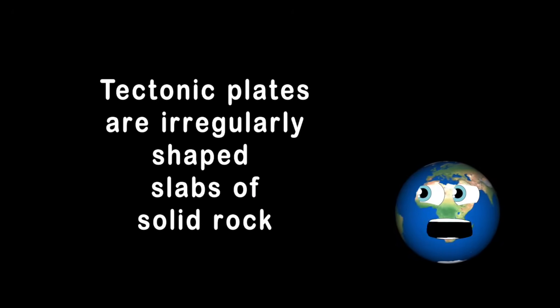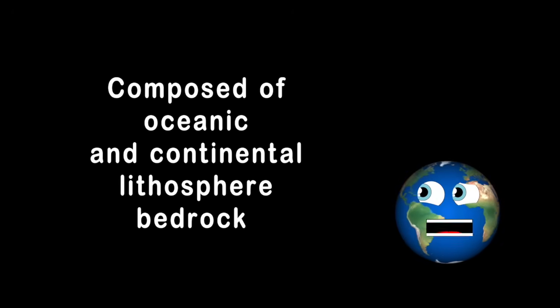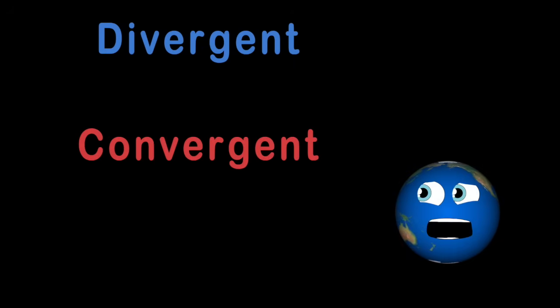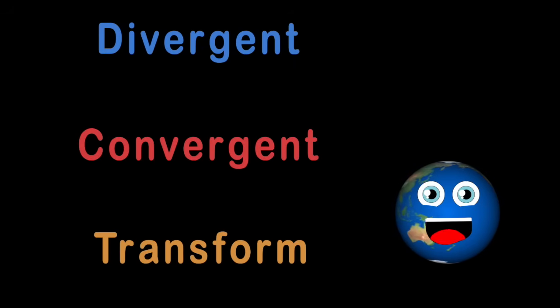Tectonic plates are irregularly shaped slabs of solid rock composed of oceanic and continental lithosphere bedrock. There are three tectonic boundaries running between tectonic plates: divergent, convergent, and transform. Now aren't those names just great?